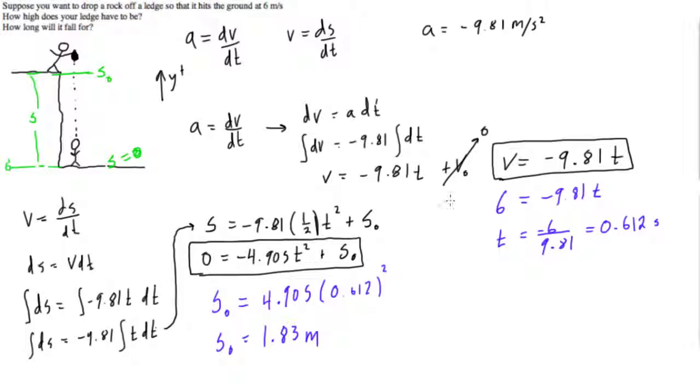So there you go, that's our constant acceleration with a function of time example, and I'll see you guys in the next video. And we will do another example where acceleration is a function of time, but now we'll have non-constant acceleration.